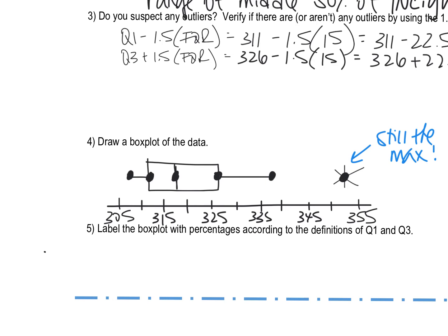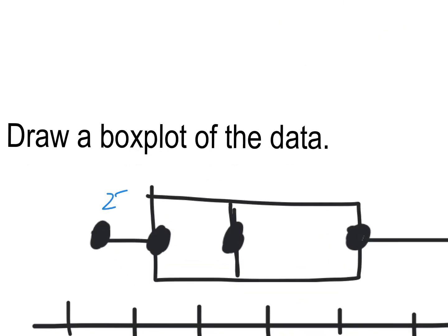The last part asks you to label the box plot with percentages according to the definitions of Q1 and Q3. And so what that means is, 25% of the linemen fall between the minimum and the Q1. That is what the Q1 means. If it is the 50 percentile of the lower half of data, what that means is 25% of the linemen fall between here and here. And then again, 50% of the data is in this box right here. And so that's split up evenly since this is the median.